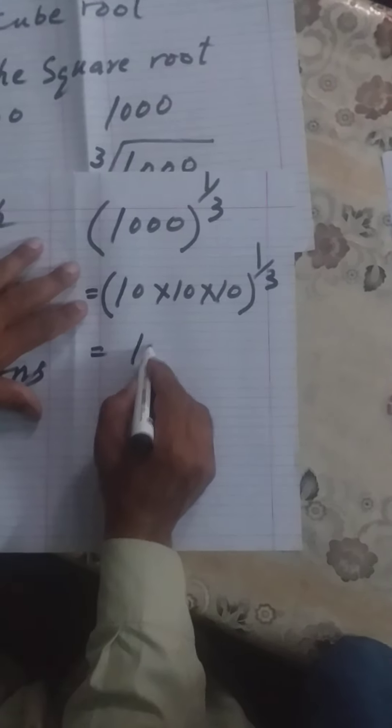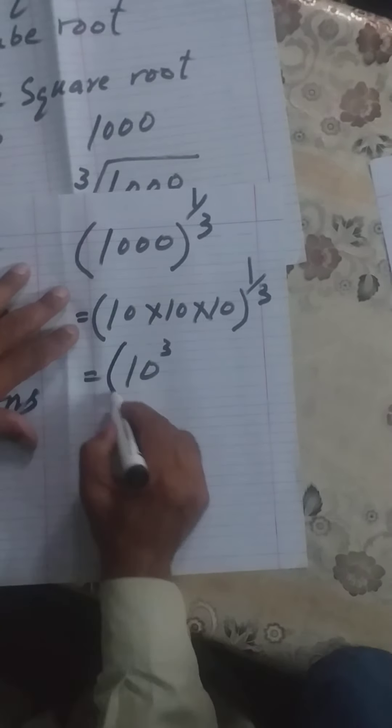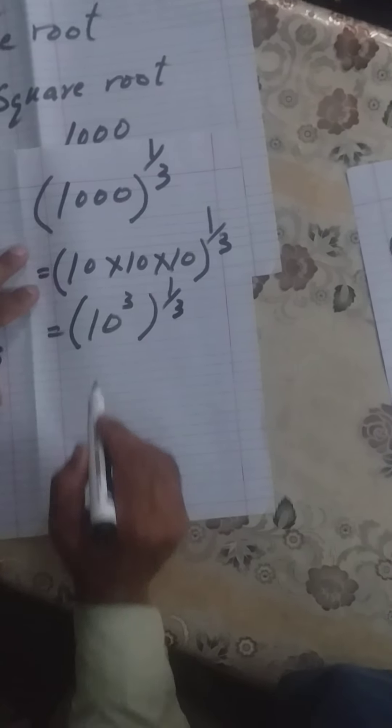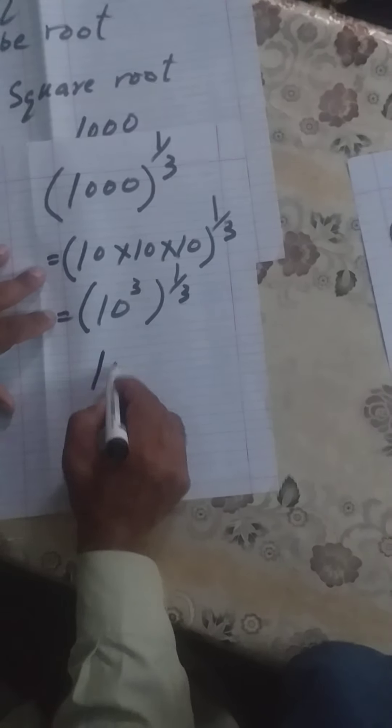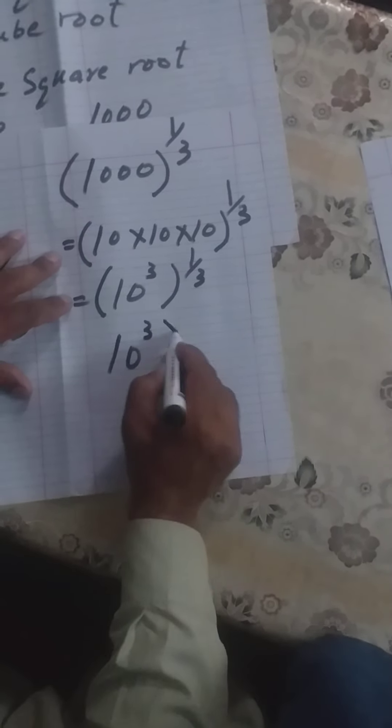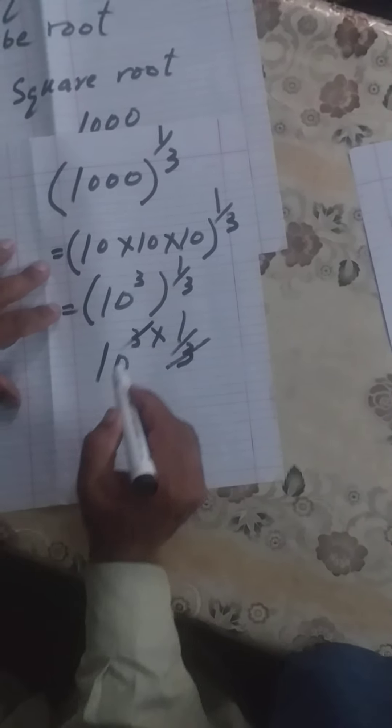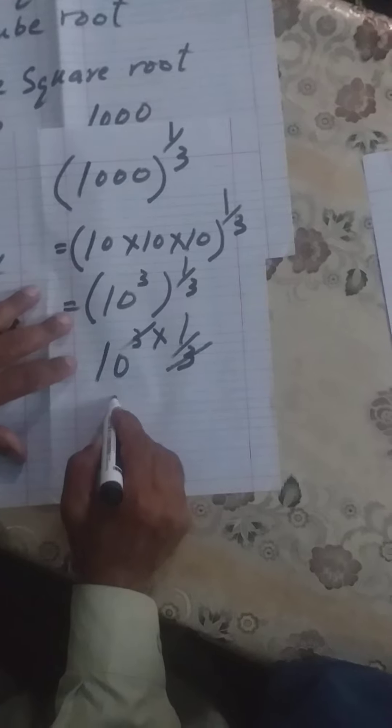In the next step, 10 to the power 3. We write it in exponential form, and whole to the power 1 by 3. The inside power multiplies with the outside power. 10 cube multiply 1 by 3. The 3 cancels with 3. Now 10 to the power 1 remains, so we don't write 1.